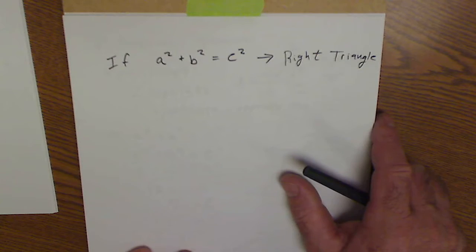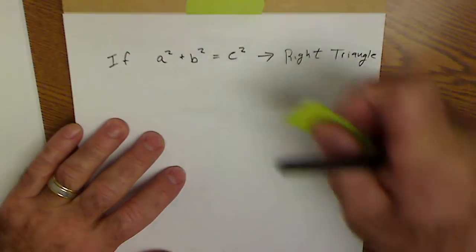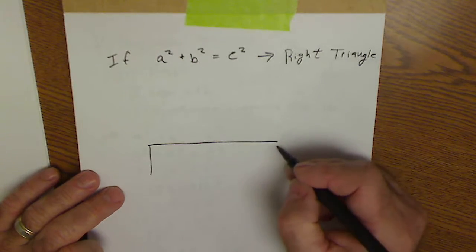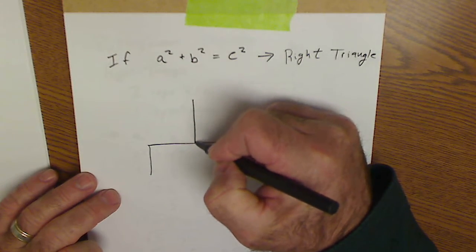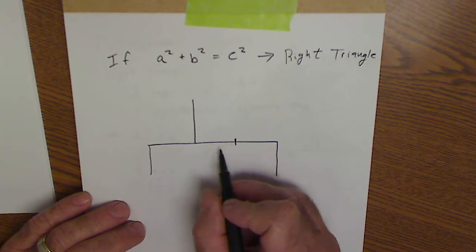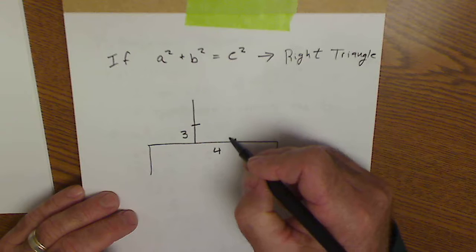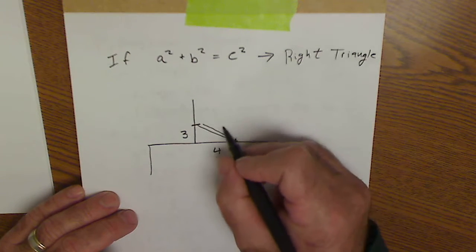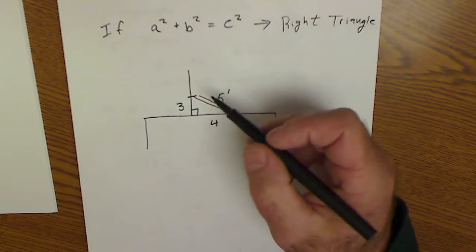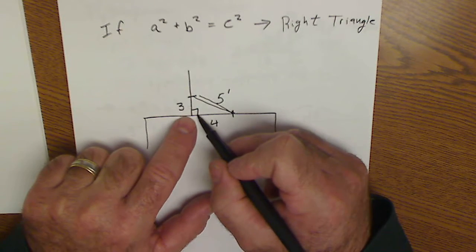You've actually done this before on a job site — most people call it three-four-fiving. Let's say you have a house and you want your fence to be perpendicular to the house. You measure down the house four feet, measure down the fence three feet, and pull a string tight. When that string is exactly five feet, it's a right angle. Three squared plus four squared equals five squared, so it is a right angle.